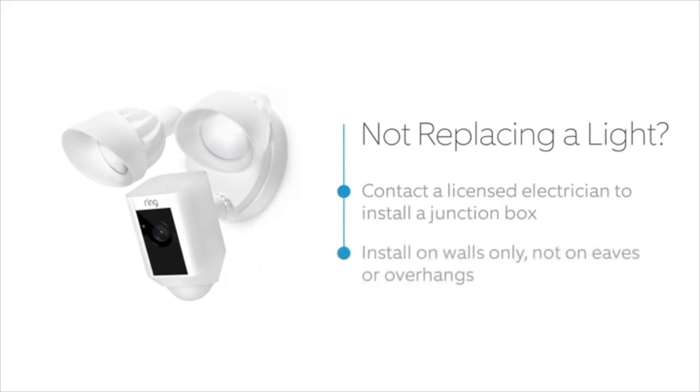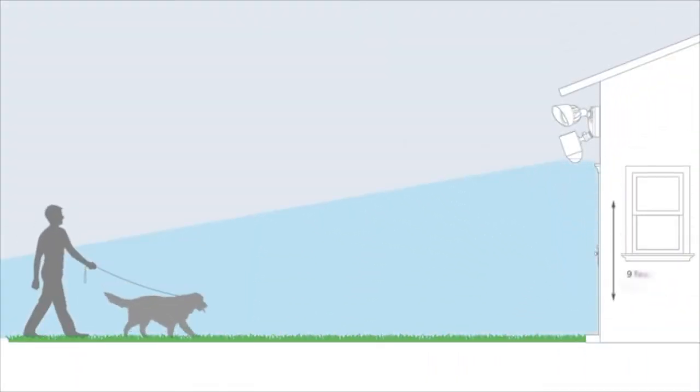Be sure to mount the junction box on a vertical wall, not on an eaves or overhang. If you're installing a new junction box for Floodlight Cam, the optimal height is 3 meters or about 9 feet off the ground.